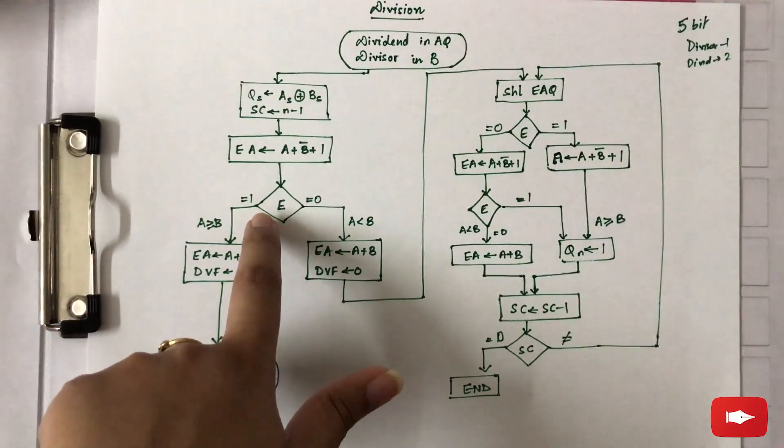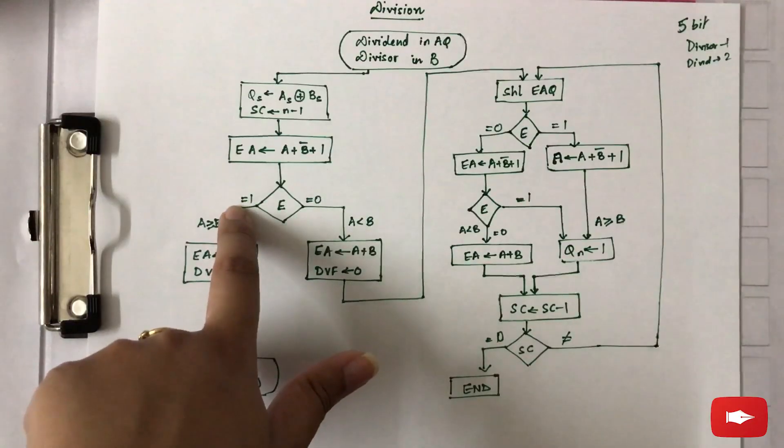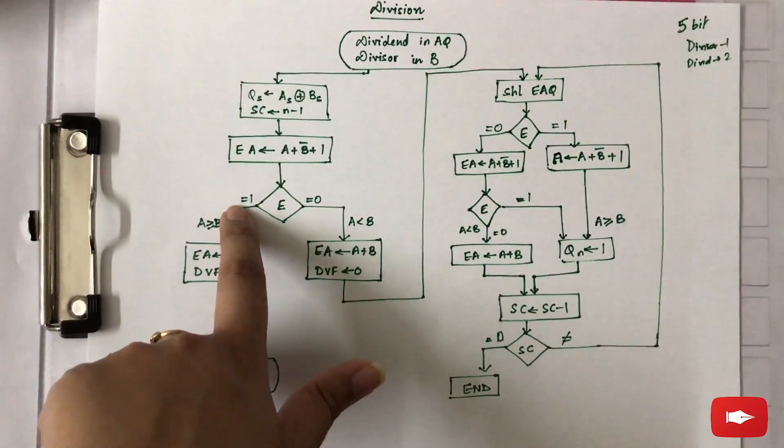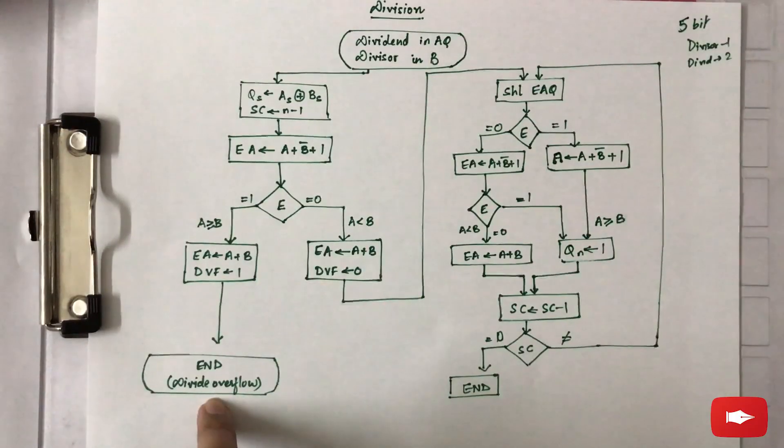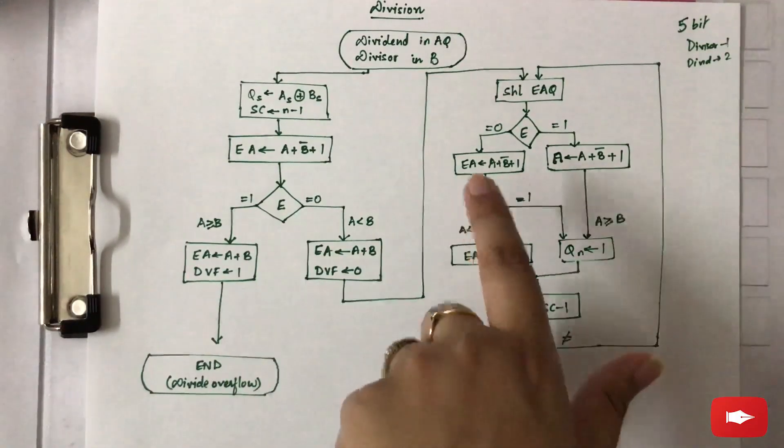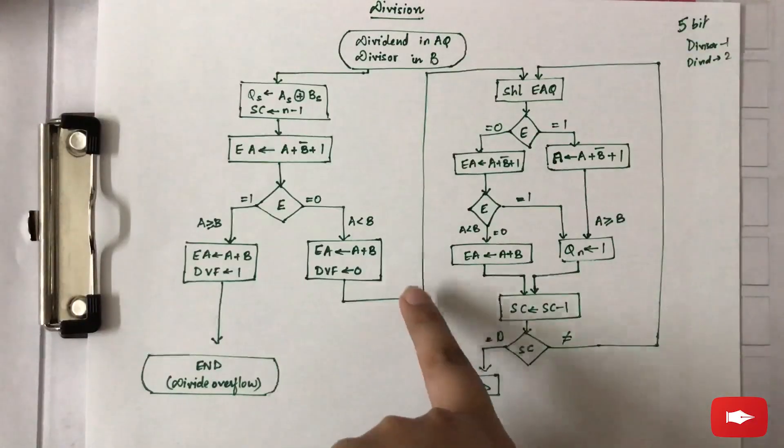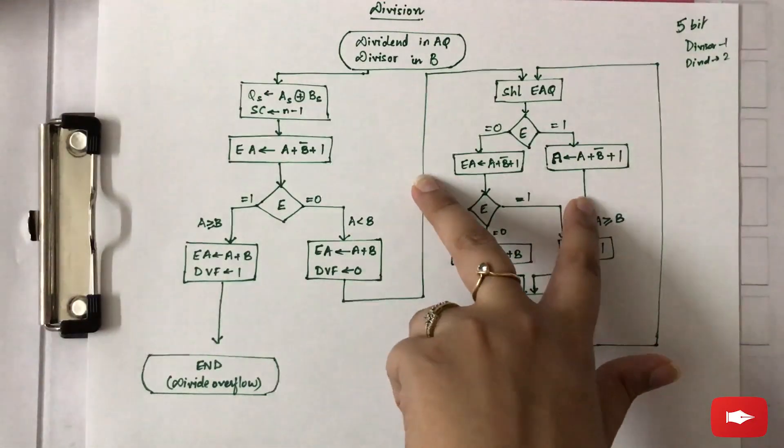The first bits of the dividend are greater than the divisor, hence it will result in divide overflow condition and we have to end that case here. But if the division is to be performed, that is this case, how it is performed is: